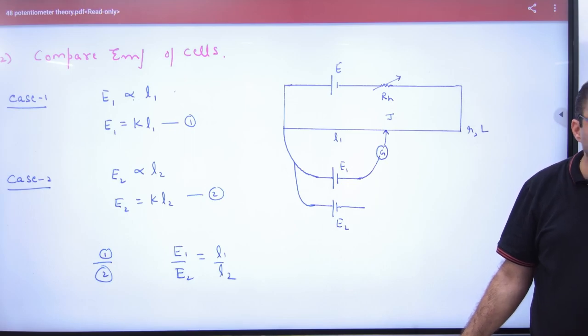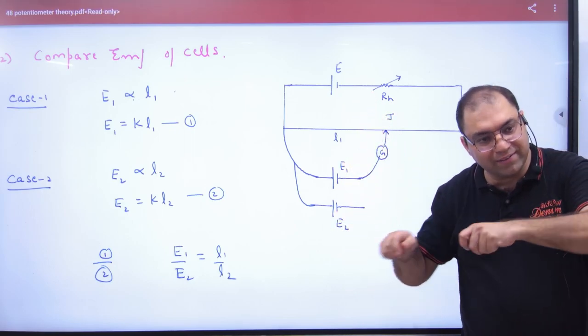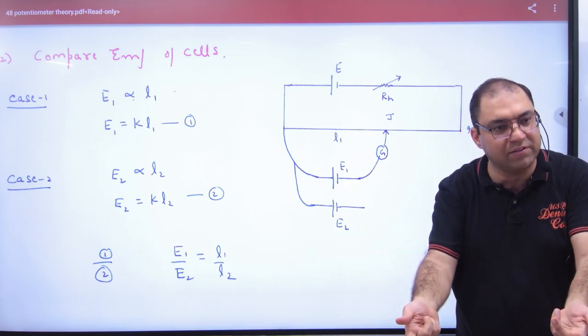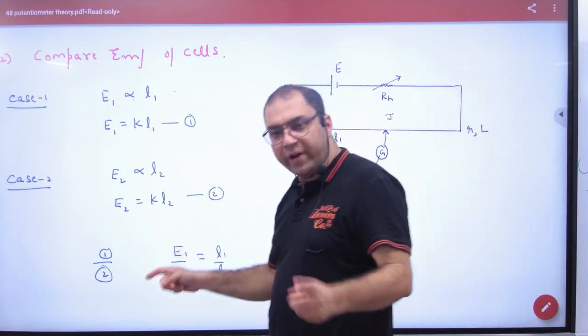Similarly second case, if you remove this battery and put this E2 proportional to L2, then E2 proportional to L2, because E2 can be greater with E1. And if EMF second battery has increased, then balancing length will be increased. So E2 proportional to L2 is clear.